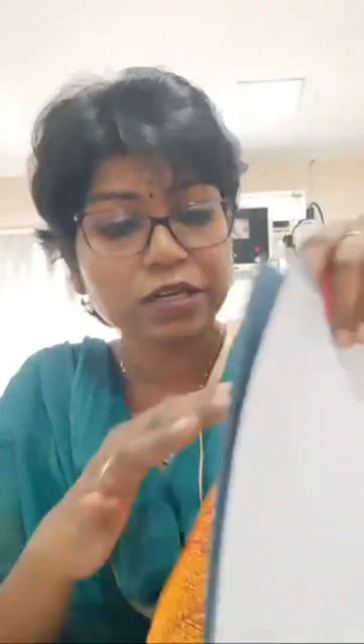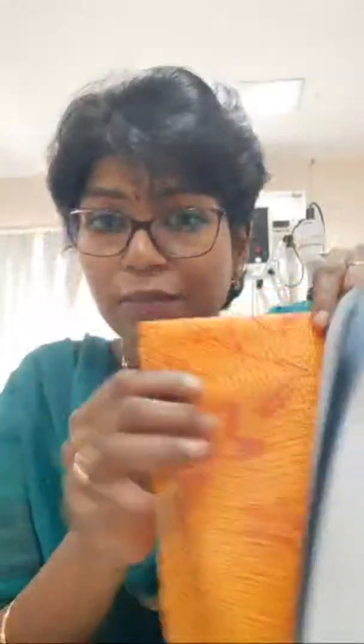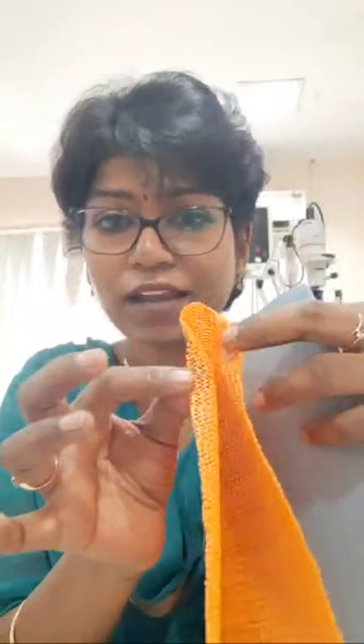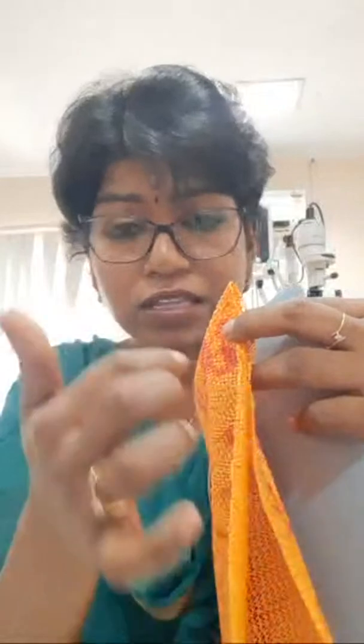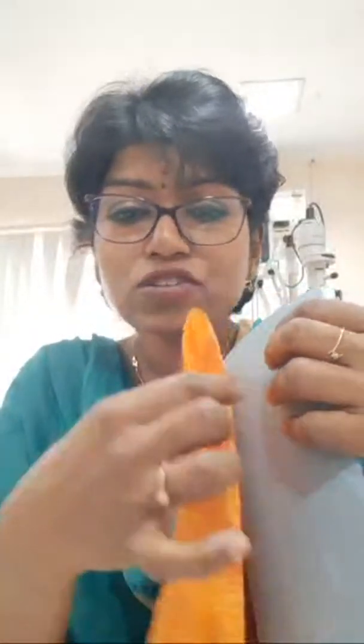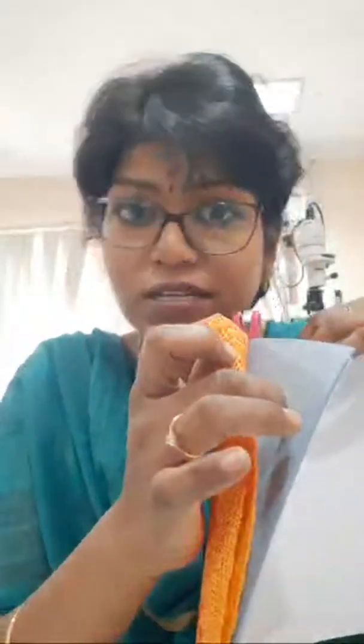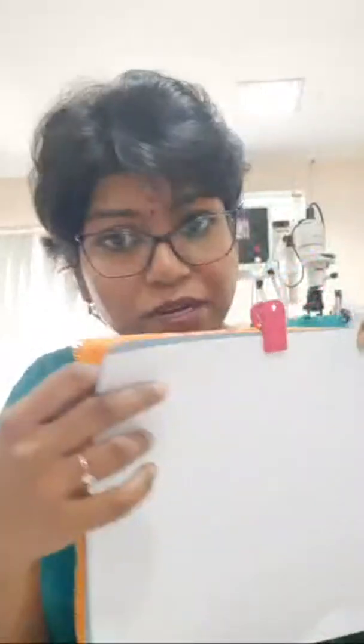The posterior layers are Descemet's membrane and endothelium. The endothelium secretes Descemet's membrane, so these two are grouped together. If any of the posterior layers are being replaced, it is called posterior lamellar keratoplasty.